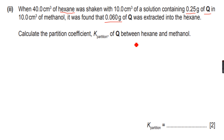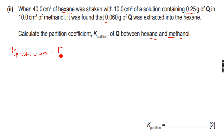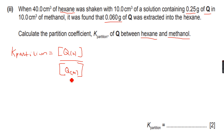The one stated first will always be in the numerator and the one stated later will be in the denominator — that's the rule. So K partition is equal to the concentration of Q in hexane (H phase) over the concentration of Q in methanol (M phase).